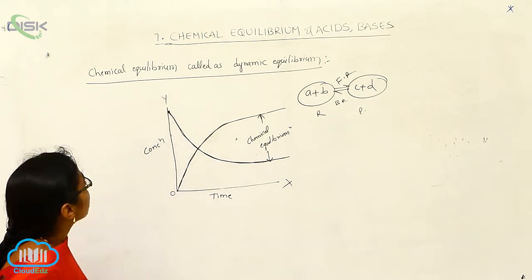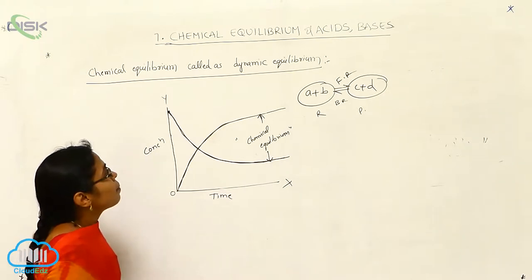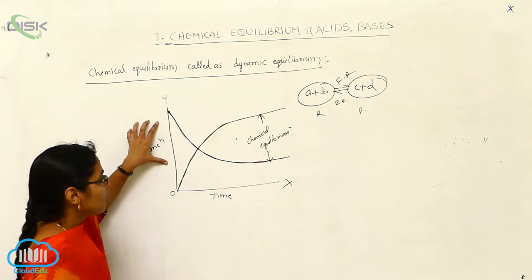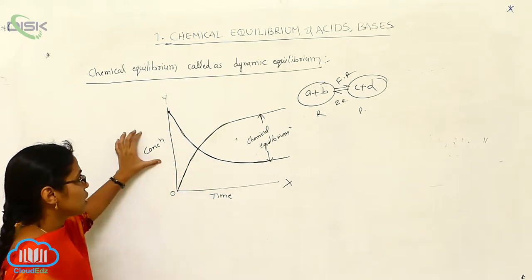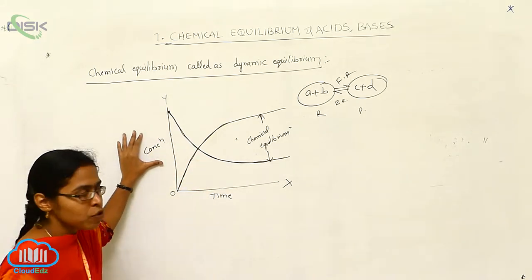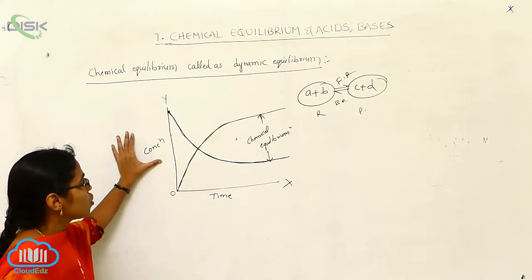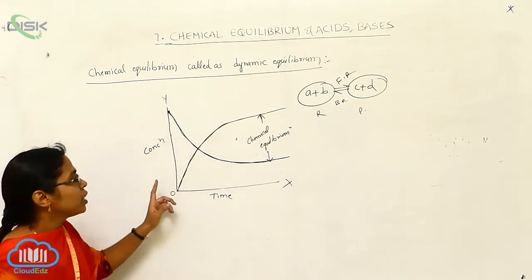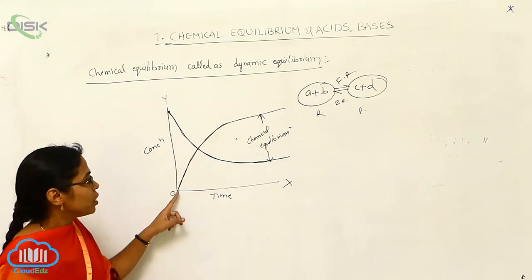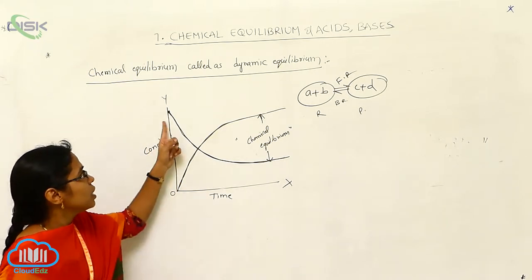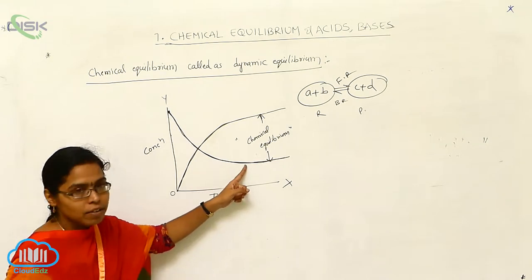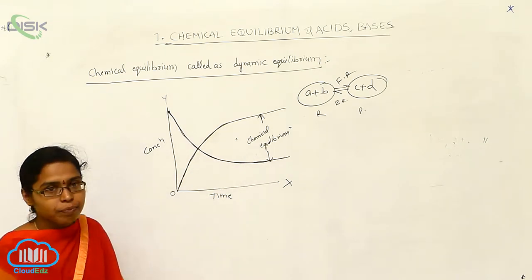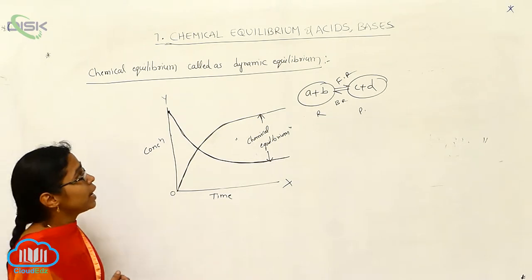Chemical equilibrium is also called dynamic equilibrium. I am giving a graph between time and concentration, with concentration on the y-axis and time on the x-axis. Whenever time increases, the concentration of reactants decreases, while the concentration of products increases. This is called dynamic equilibrium.